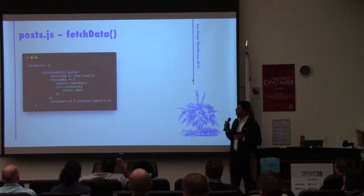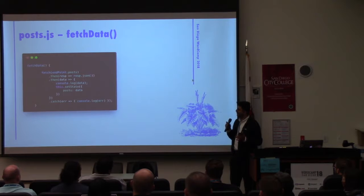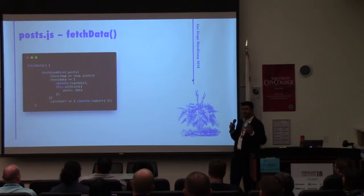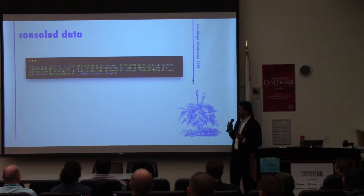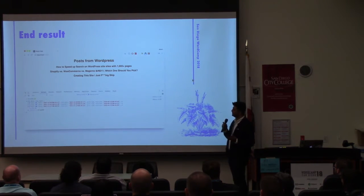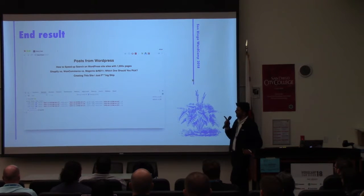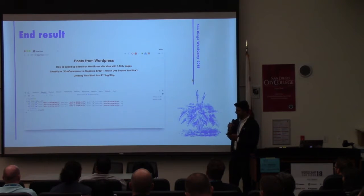That's where we're getting our data — we console log it out, and then we set the state of the posts we created earlier with the data we get, so the data is stored as a prop in our component. Let's take a look at the console log result: this is the array we got. Opening it up shows an array of three objects, which are the three posts I had created. And this is the end result — you get an H1 and then a list of three divs for all the posts, plus the component console log output.